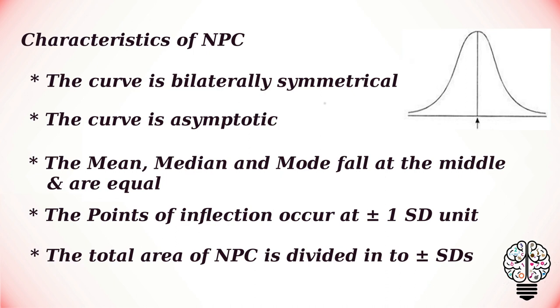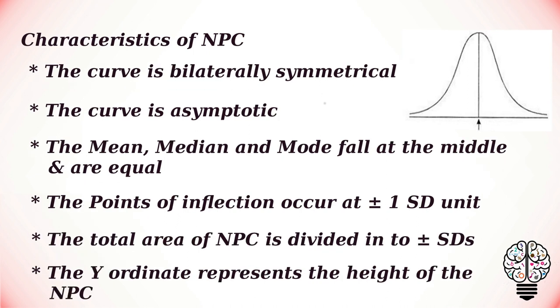From the center, it is divided into 3 positive standard deviation units and 3 negative standard deviation units. The y coordinate represents the height of normal probability curve.